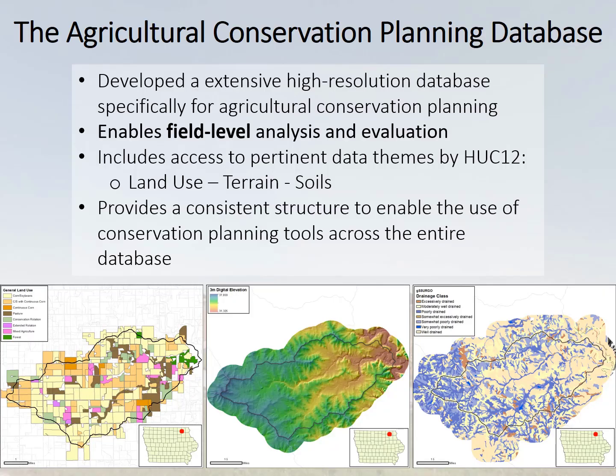The second component of the ACPF is the ACPF database, which takes advantage of high-resolution spatial data and allows ACPF results to match the field scale — the scale at which conservation practices are actually implemented. Three types of core data are included: land use, soil survey, and elevation or terrain data. Our database assembles data for individual HUC-12 watersheds and utilizes a consistent structure so that the ACPF conservation planning tools can be applied in watershed improvement projects wherever the data are available.